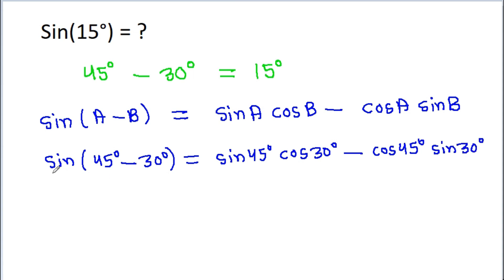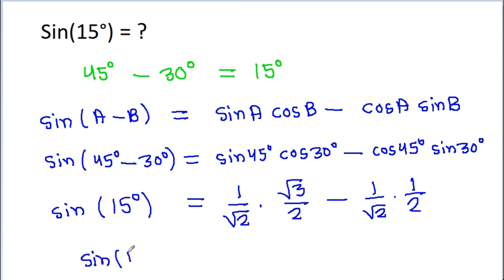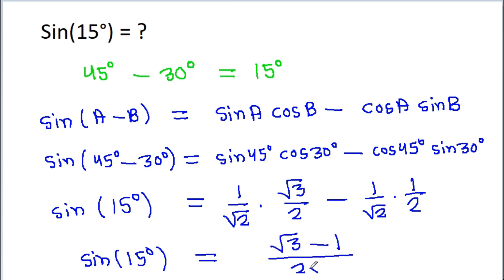Now we get sin(45 minus 30) degree, which is 15 degree, is equal to sin 45 degree which is 1 by root 2, and cos 30 degree is root 3 by 2, minus cos 45 degree which is 1 by root 2, and sin 30 degree is 1 by 2. So we get sin 15 degree is equal to root 3 minus 1 by 2 root 2.